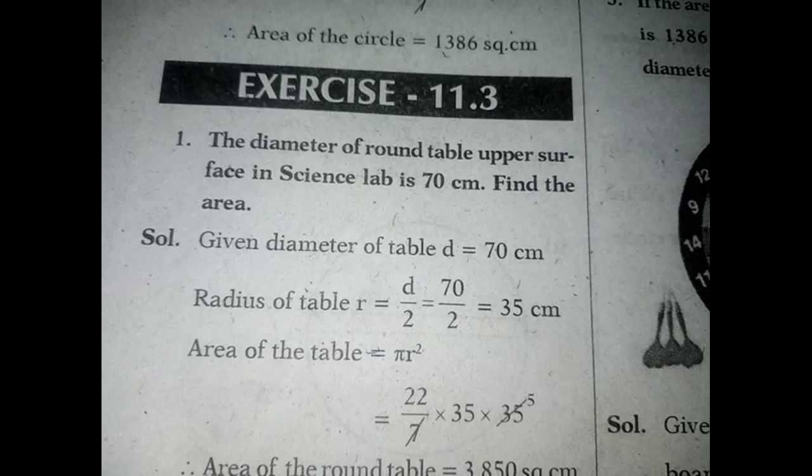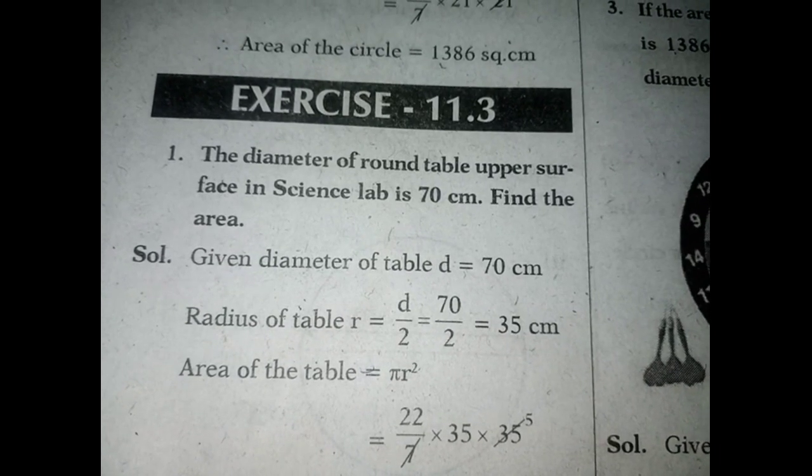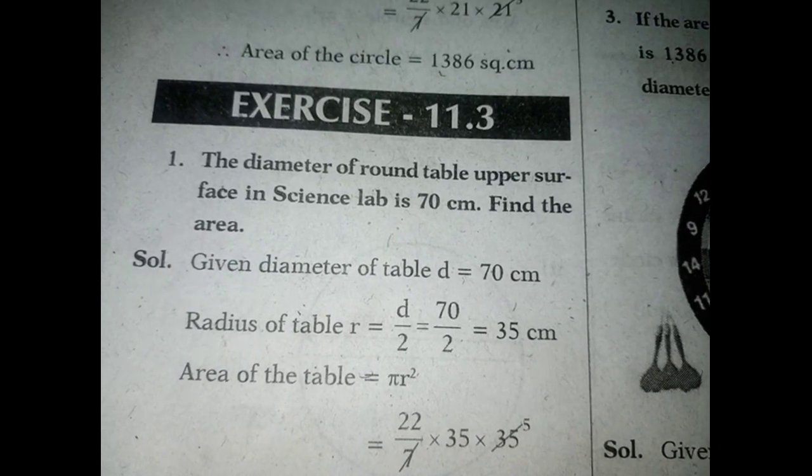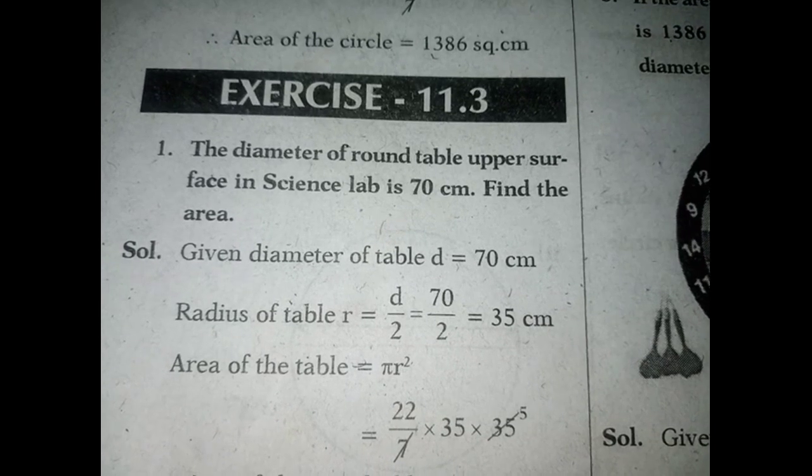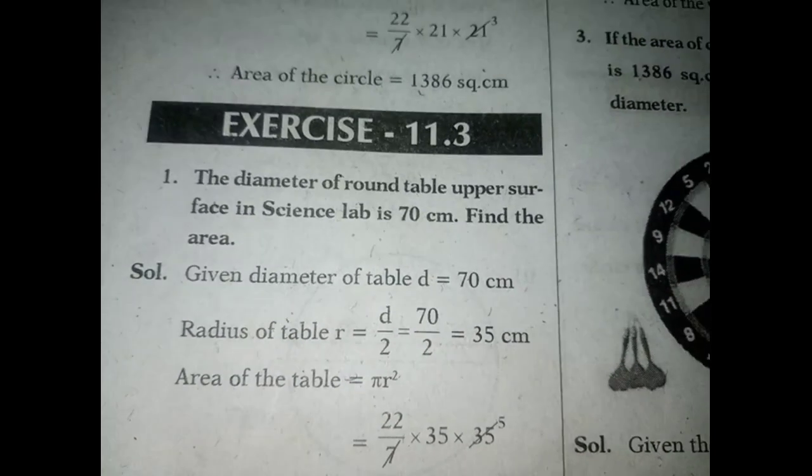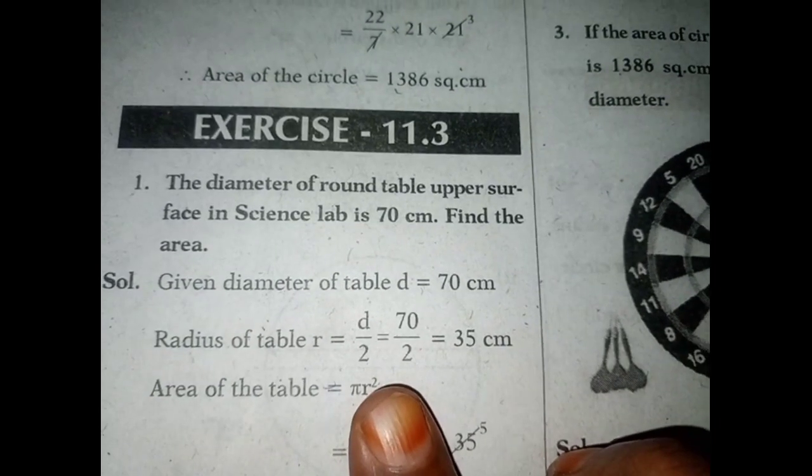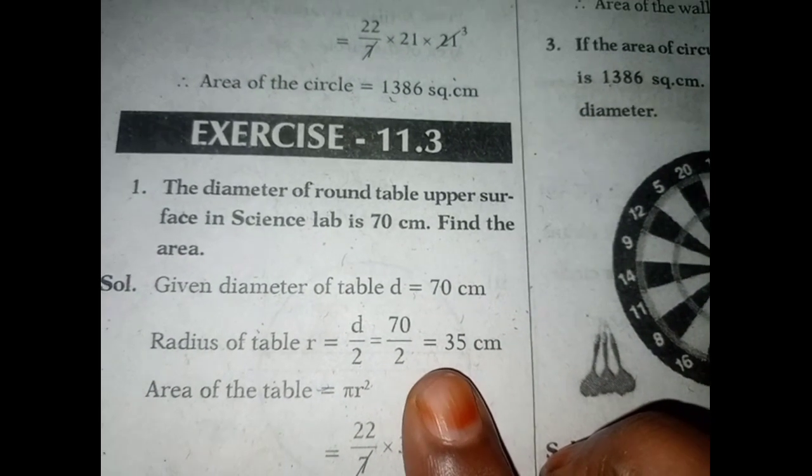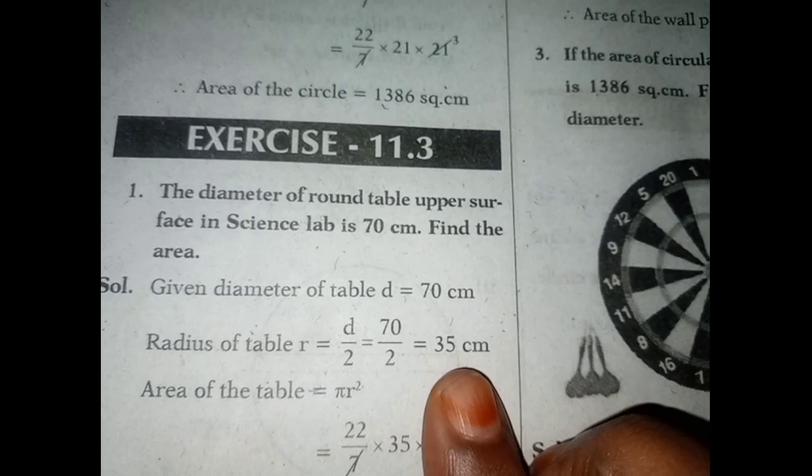Find the area. Given diameter of table d equals 70 cm, radius of table r equals d by 2, equals 70 by 2, equals 35 cm.